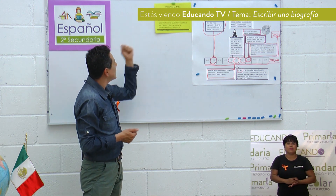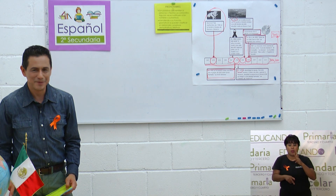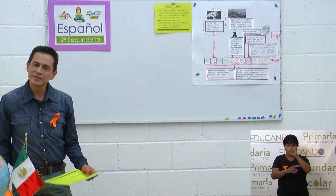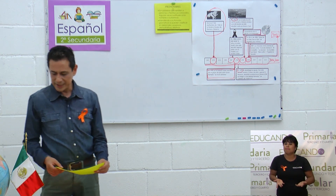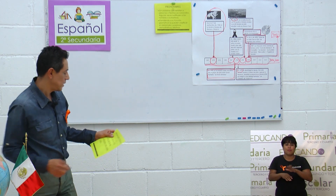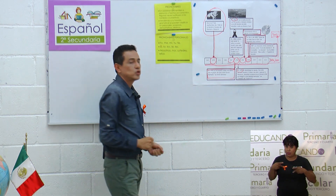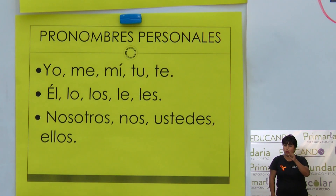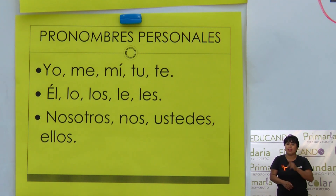Vamos a empezar con los pronombres personales. Los pronombres personales son: yo, me, tú y te. Otros también son él, lo, los, le y les. Y también tenemos nosotros, nos, ustedes y ellos. ¿Verdad que es fácil? ¿Verdad que ya los habían visto?